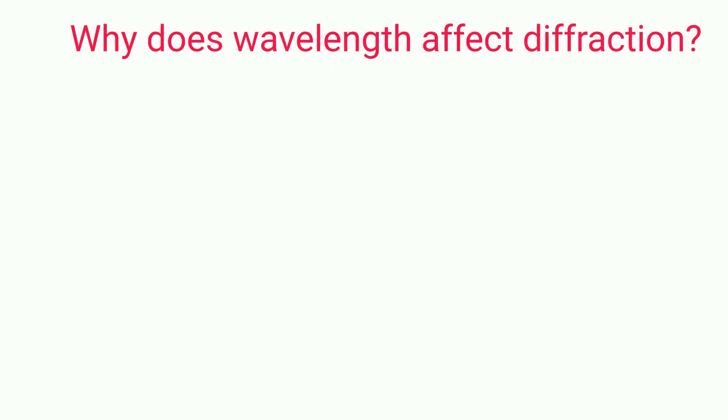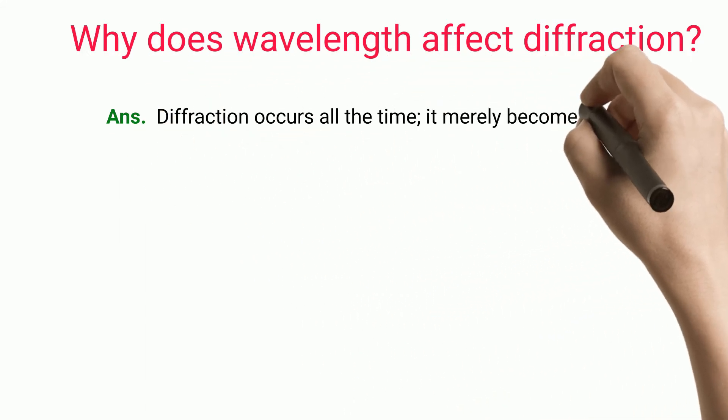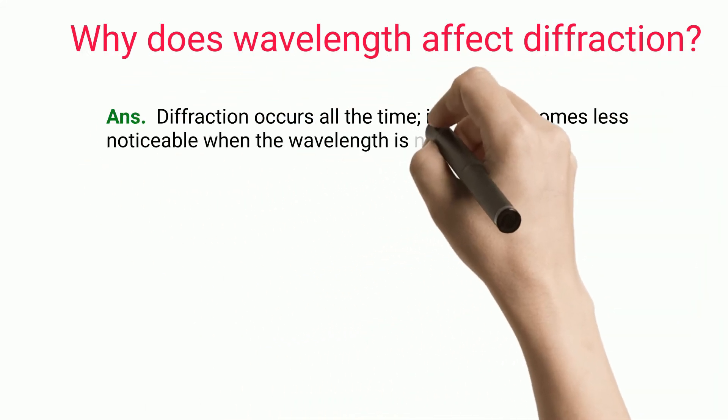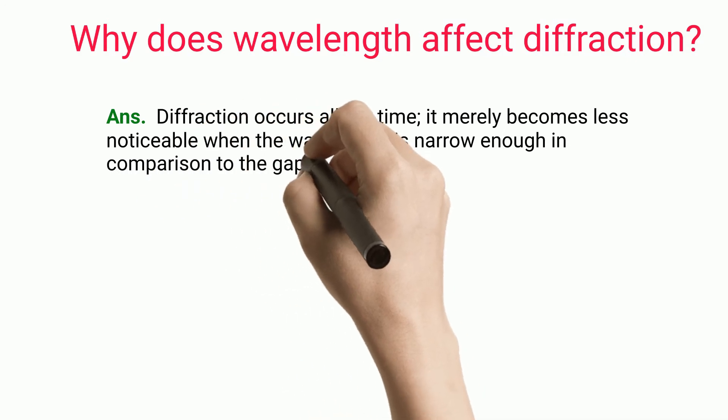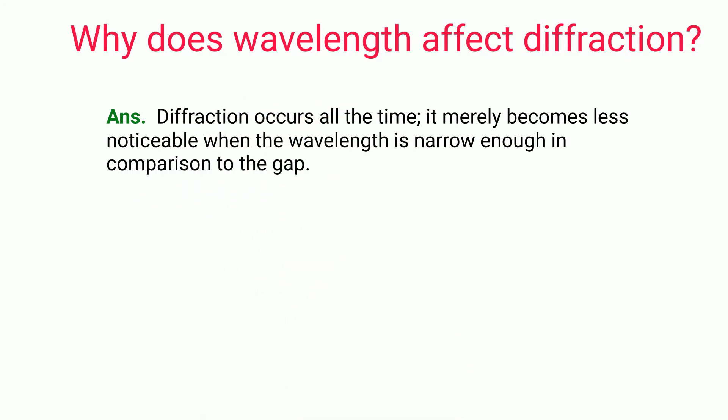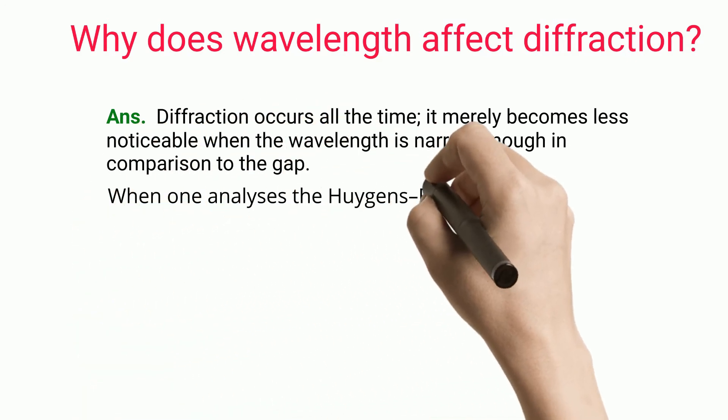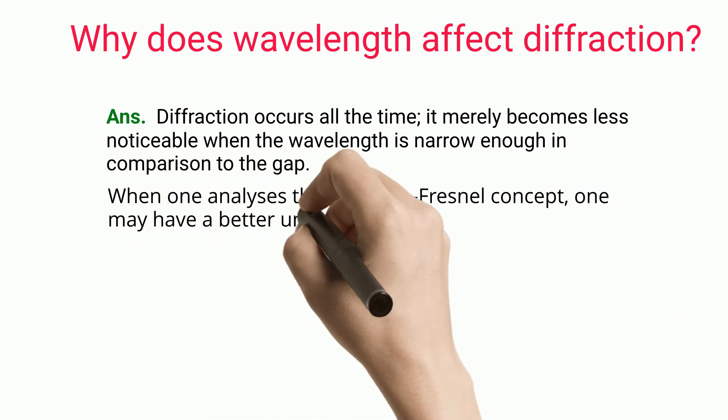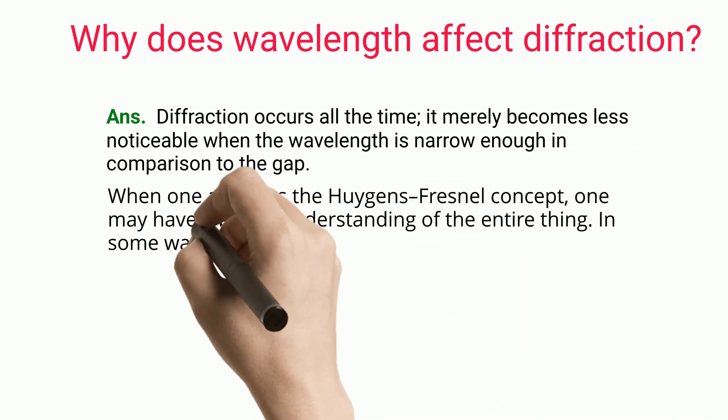Why does wavelength affect diffraction? Diffraction occurs all the time, it nearly becomes less noticeable when the wavelength is narrow enough in comparison to the gap. When one analyzes the Huygens-Fresnel concept, one may have a better understanding of the entire thing.